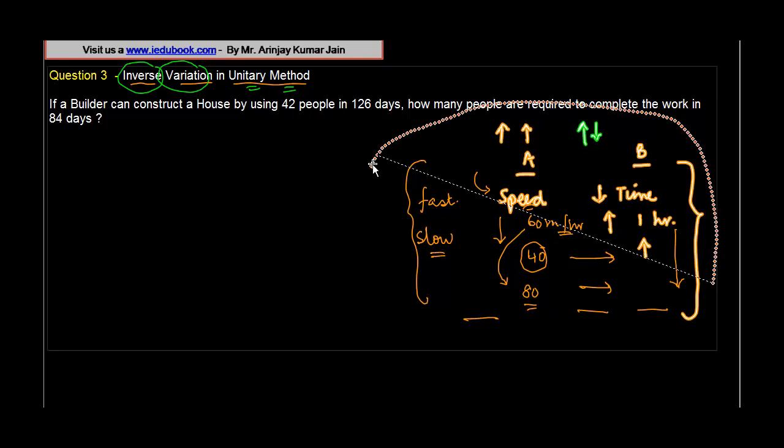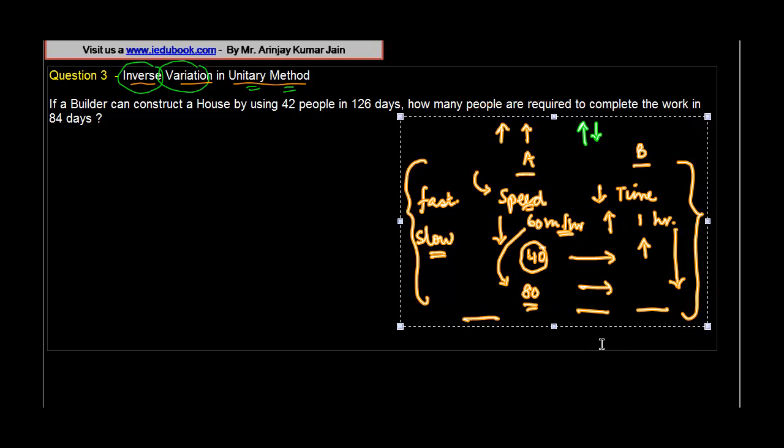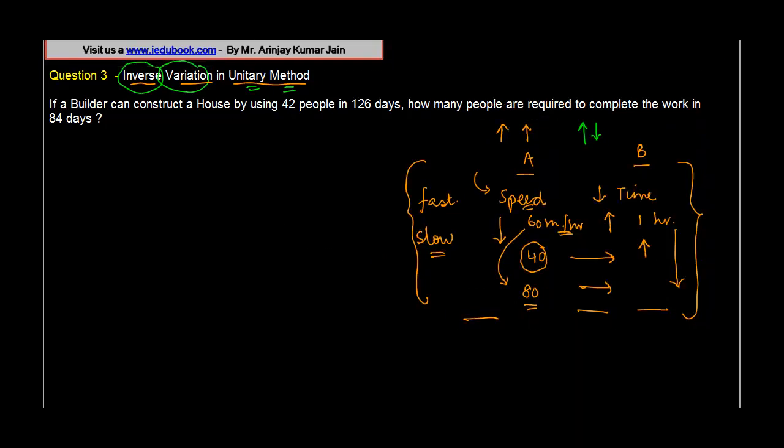Let us concentrate on this: If a builder can construct a house by using 42 people in 126 days. So when 42 people were working, it took 126 days to complete the house.